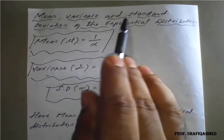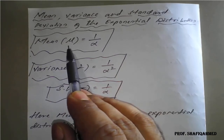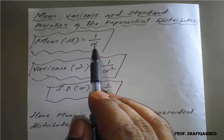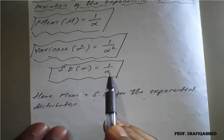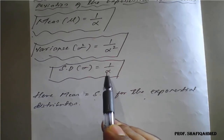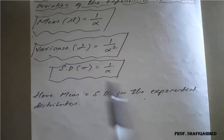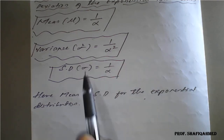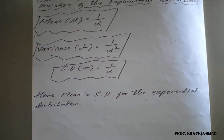For mean, variance, and standard deviation of the exponential distribution — no proof is required, just remember the results directly. Mean = 1/α, variance = 1/α², and standard deviation = 1/α. Notice that the mean and standard deviation are equal for the exponential distribution. Using this concept and the expression, we will solve examples.